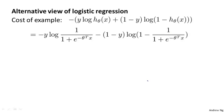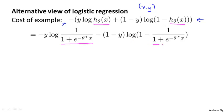If you look at the cost function of logistic regression, what you find is that each example x comma y contributes a term like this to the overall cost function. For the overall cost function, we would also have a sum over all training examples and a 1 over m term. But this expression is the term that a single training example contributes to the overall objective function for logistic regression. If I plug in the form of my hypothesis, then each training example contributes that term — ignoring the 1 over m — to my overall cost function.